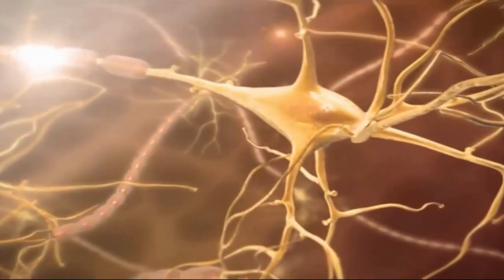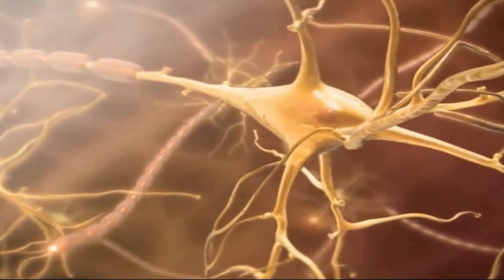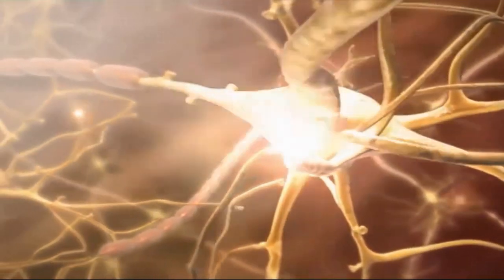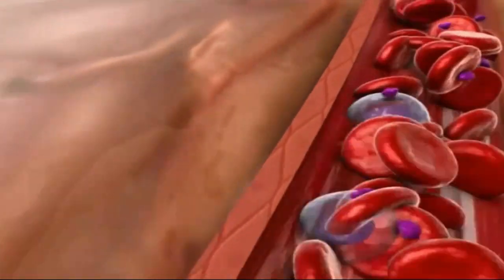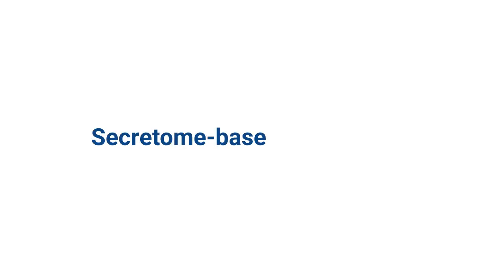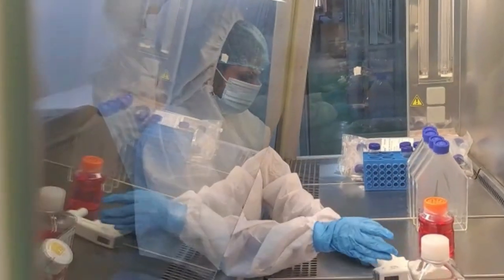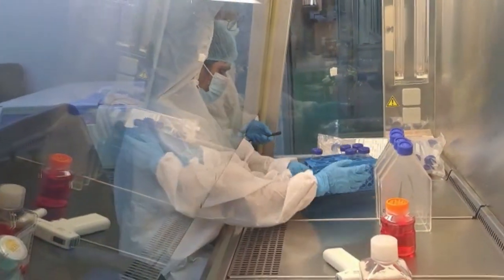The cells can populate the scaffolds, differentiate into specific cell types, and contribute to the formation of functional tissues. Wharton's jelly mesenchymal stem cells also secrete various factors that can influence the surrounding microenvironment.